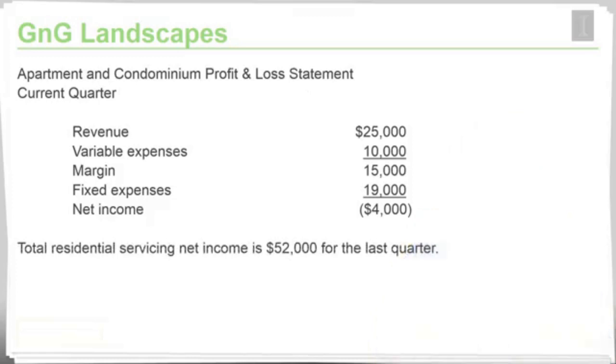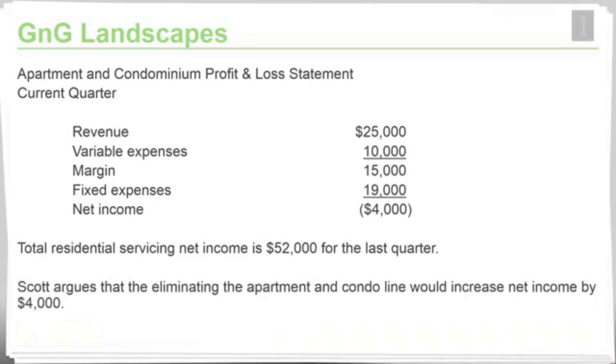Now, total residential servicing net income, that's all of those residential lines put together, amounts to $52,000 in net income for the last quarter. So Scott argues that eliminating the apartment and condo line would increase net income by $4,000, the amount of the current loss of this line. And were it to be eliminated, we would no longer have this loss.